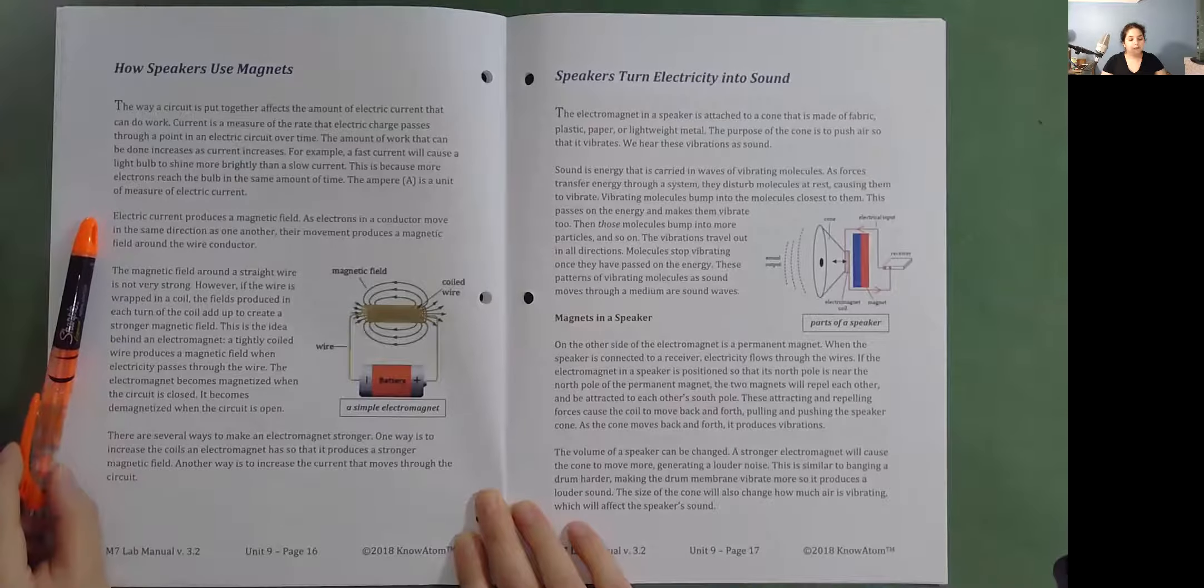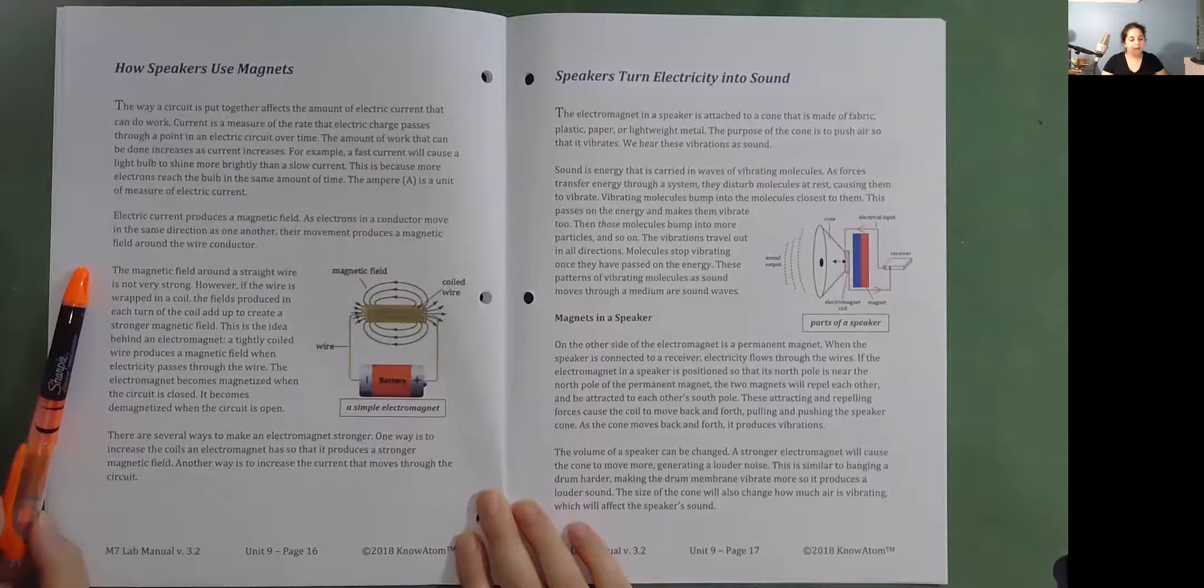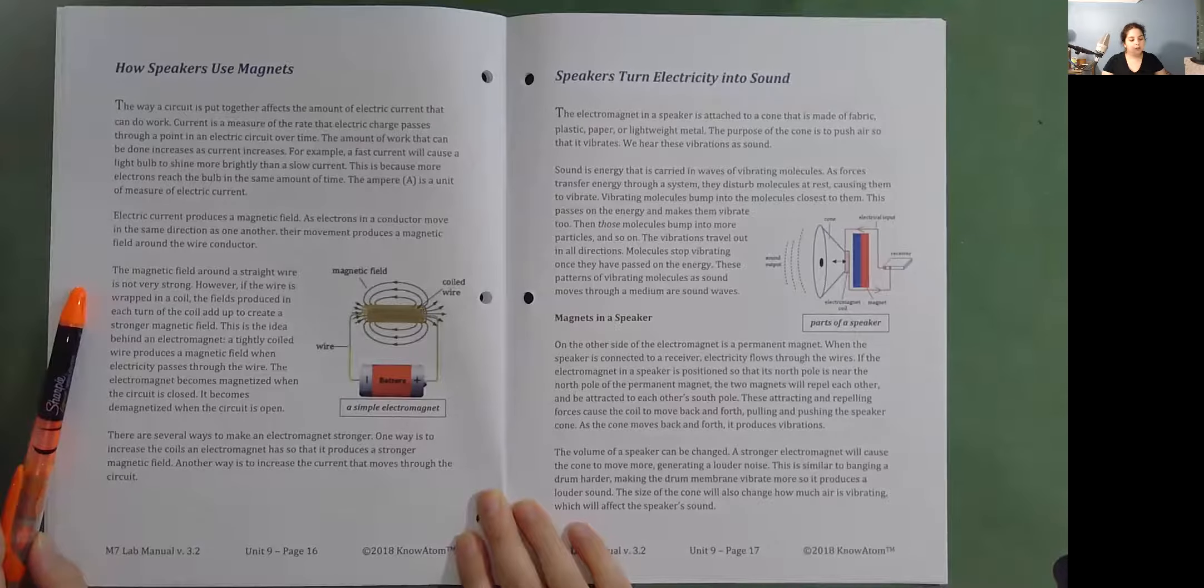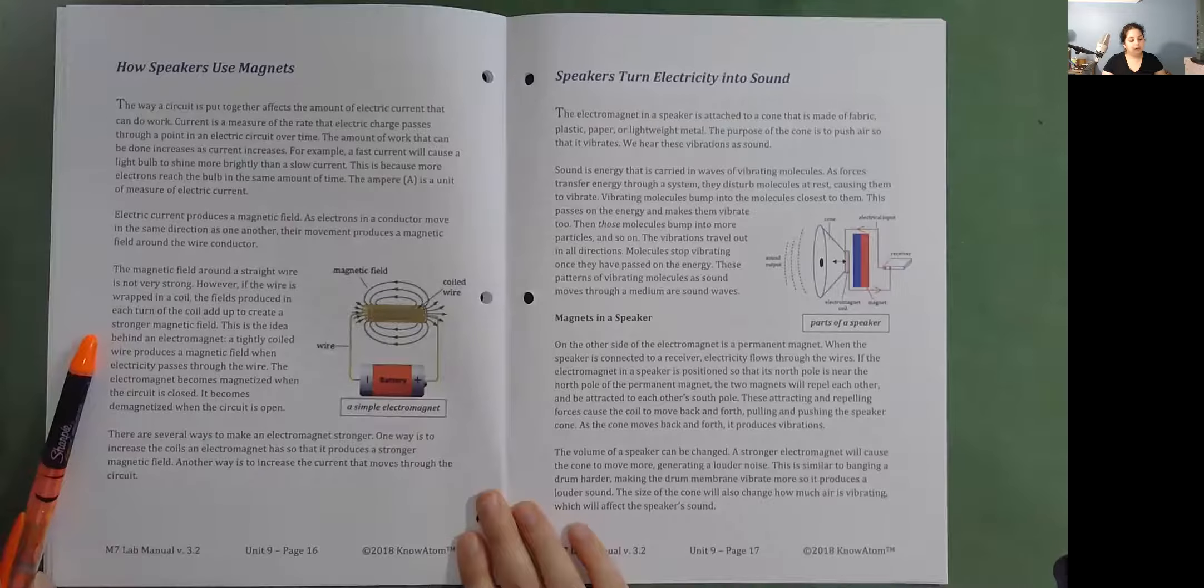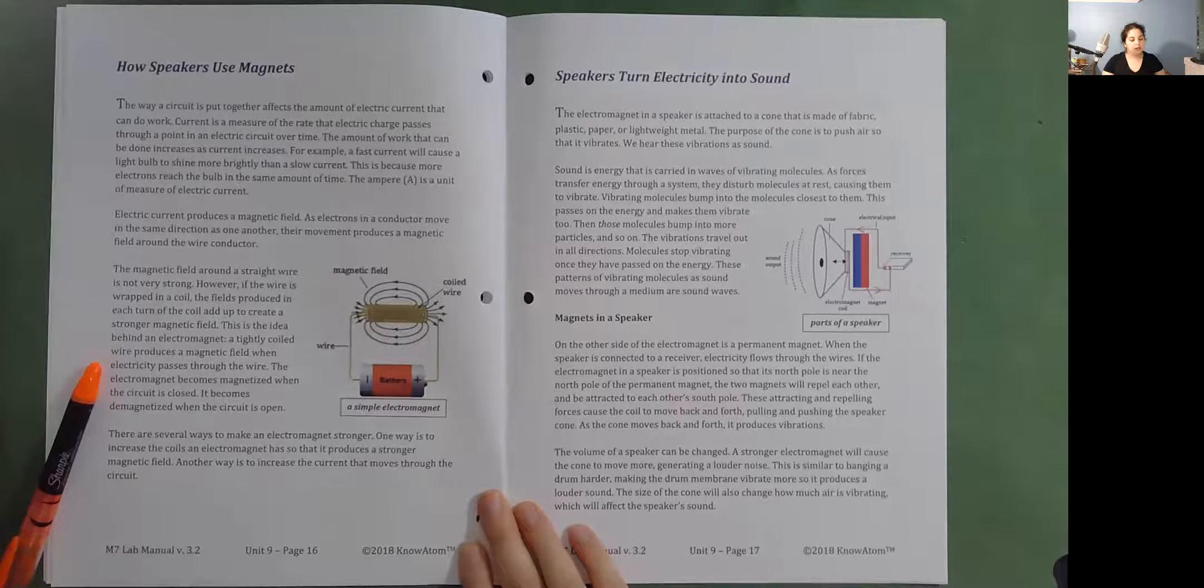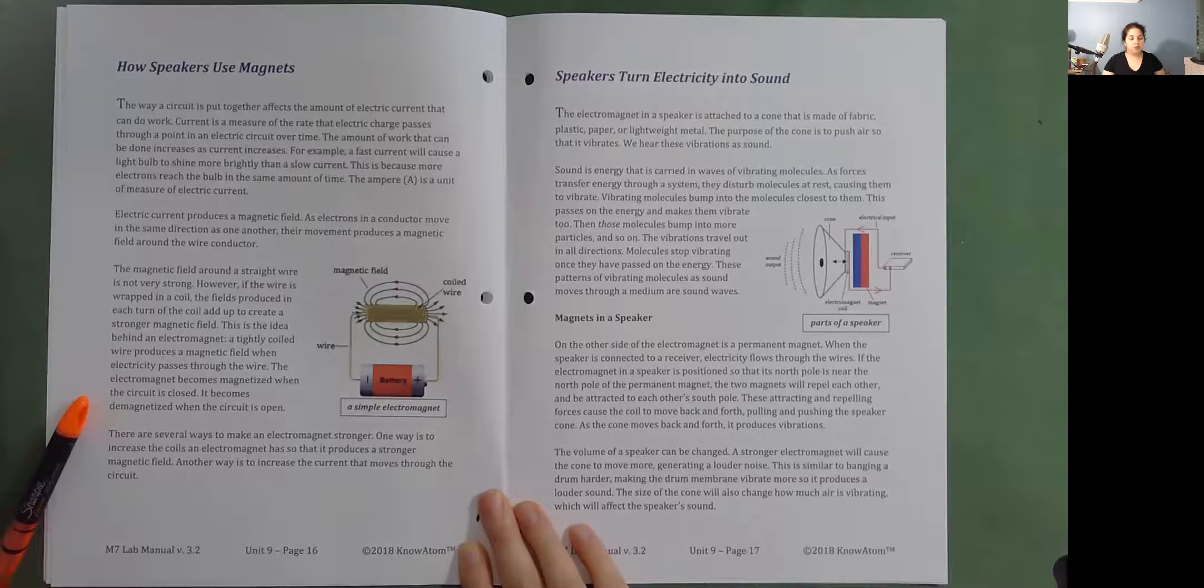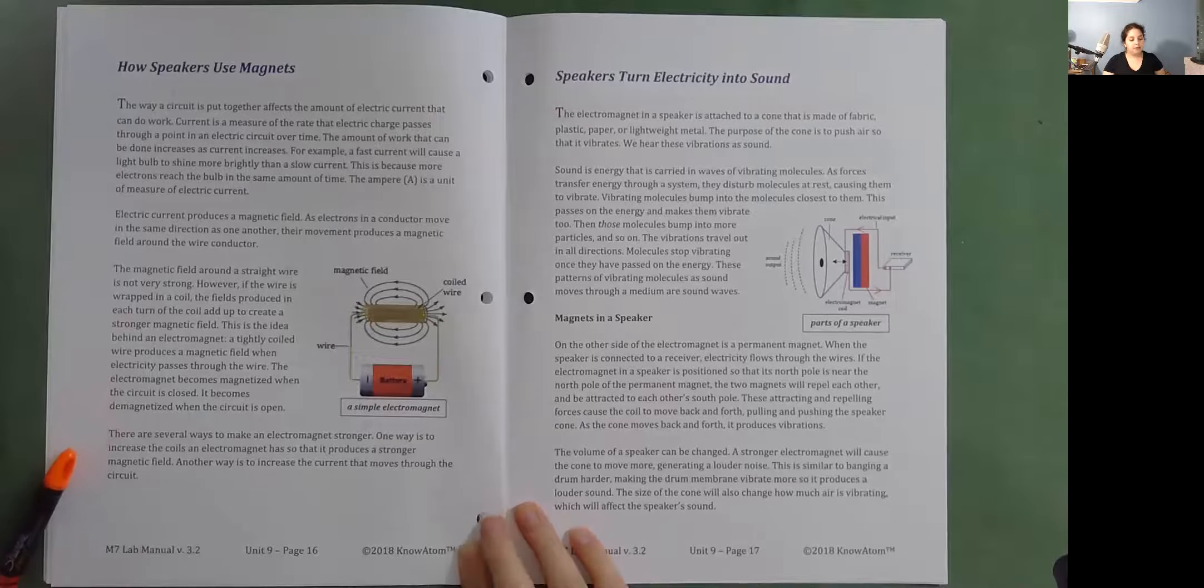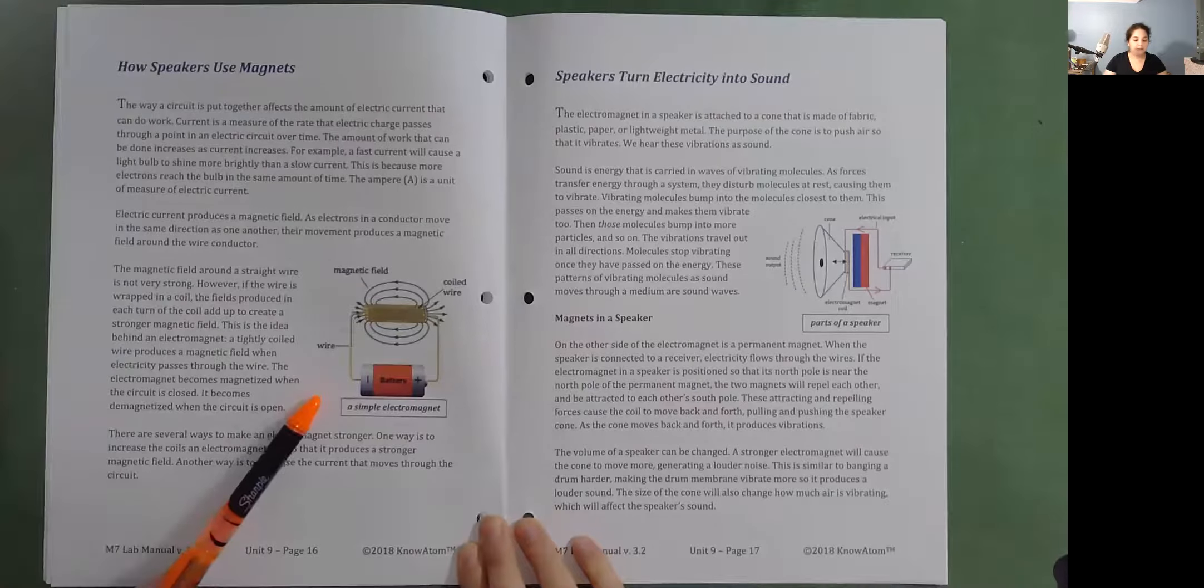Electric current produces a magnetic field. As electrons in a conductor move in the same direction as one another, their movement produces a magnetic field around the wire conductor. The magnetic field around a straight wire is not very strong. However, if the wire is wrapped in a coil, the fields produced in each turn of the coil add up to create a stronger magnetic field. This is the idea behind an electromagnet. A tightly coiled wire produces a magnetic field when electricity passes through the wire. The electromagnet becomes magnetized when the circuit is closed. It becomes demagnetized when the circuit is open. There are several ways to make an electromagnet stronger. One way is to increase the coils an electromagnet has so that it produces a stronger magnetic field. Another way is to increase the current that moves through the circuit. Here's a diagram of a simple electromagnet.